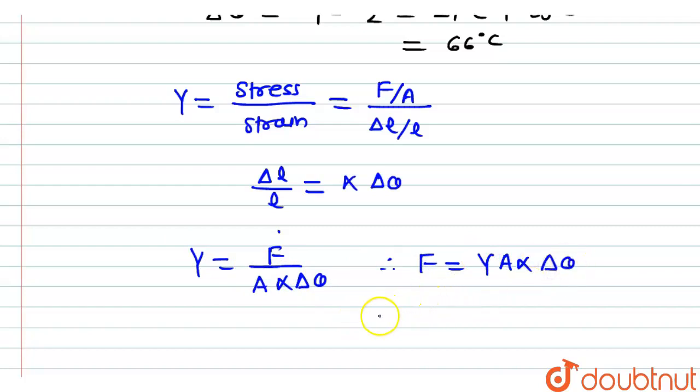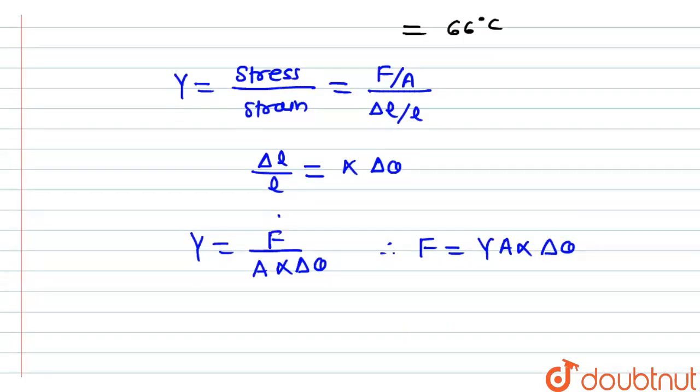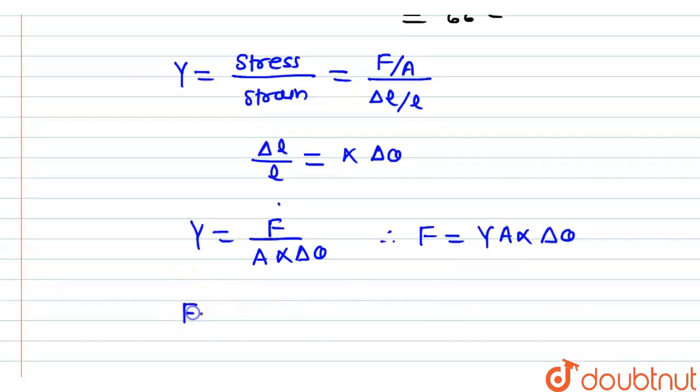Now, putting respective values here, value of thermal force produced F, and this thermal force is nothing but tension developed in the wire, which equals the value of Y is 9 into 10 raise to the power 10 into the value of area is calculated by the formula pi R square.